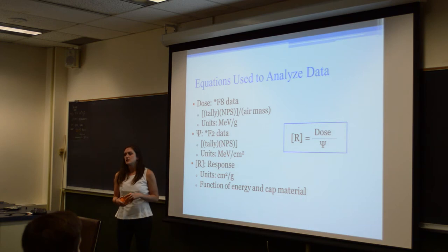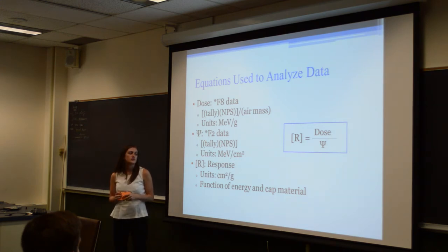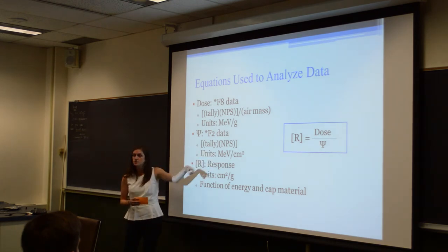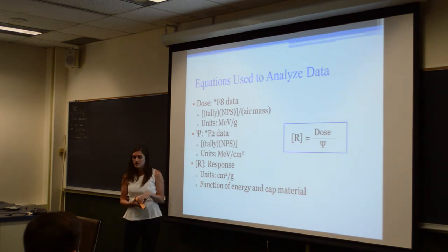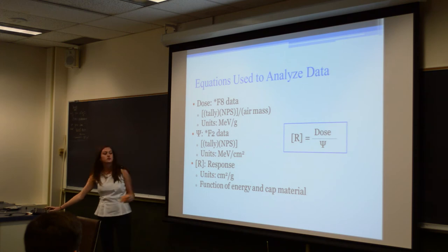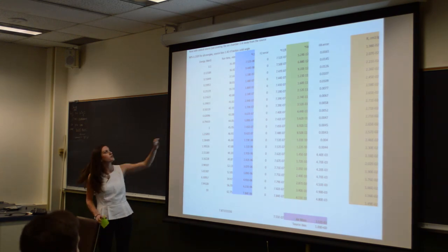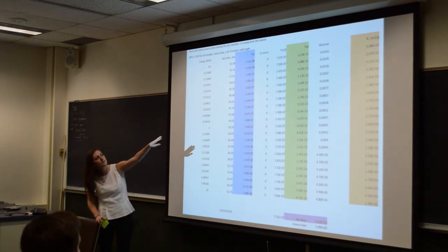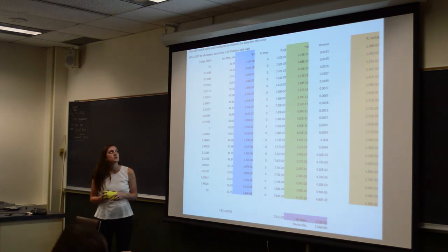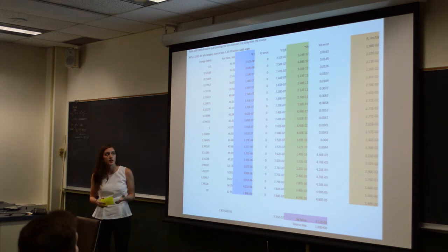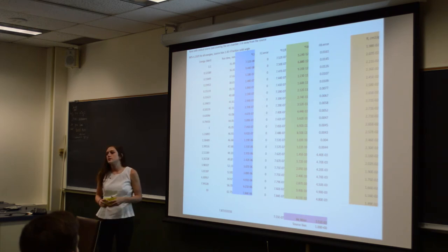We first graphed it as a function of energy to see where we were at in our progress. Then we realized that if we run the F2 tally also, we can get units of centimeters squared. We normalized this tally, which gave us MeV per centimeter squared. When you divide dose by fluence, you get the correct units for response, which are centimeters squared per gram — the same units used in the published graph. The blue column is the F2 tally, the green column is the F8, and in purple we have air mass. Once we did the calculations, that gave us our orange column, which are our response values, and we were able to graph this as a function of energy.